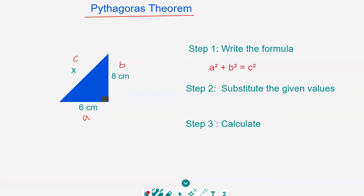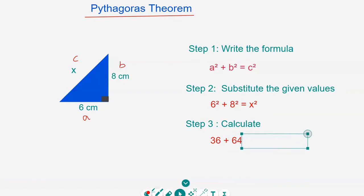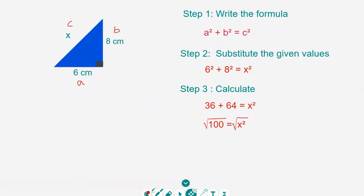We substitute the values into the formula: a is 6 so we square that, b is 8, and the hypotenuse is x squared. Six squared is 36, eight squared is 64. Adding them: 36 plus 64 equals 100, so 100 equals x squared. To find x, we square root both sides — the square root of 100 is 10, and the square root of x squared is x. So x equals 10 centimeters.